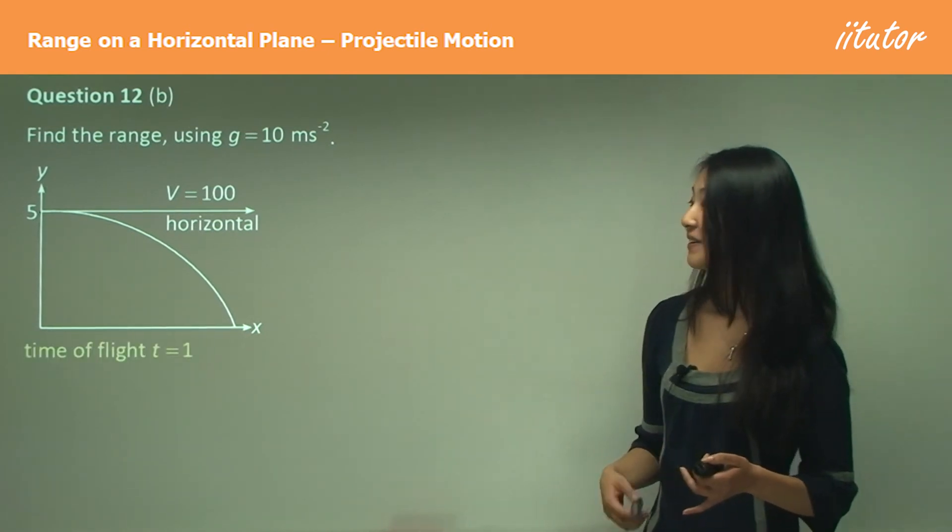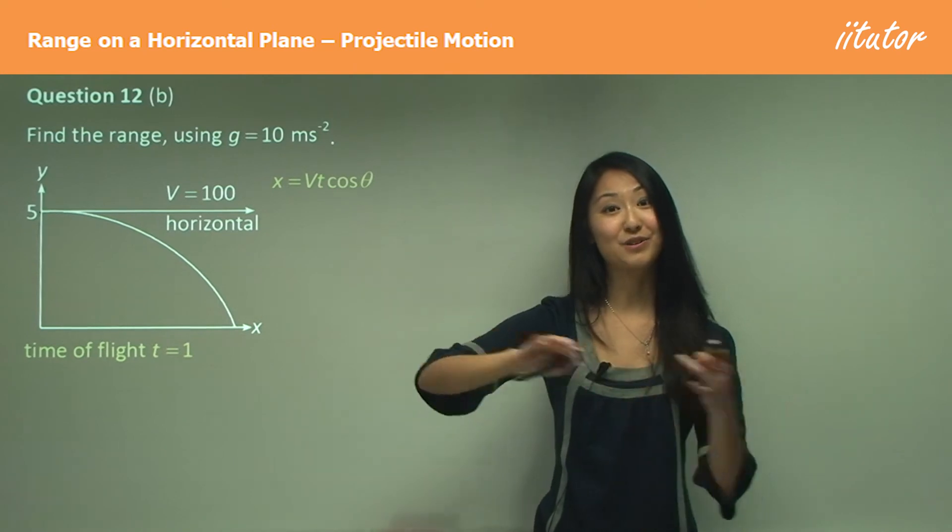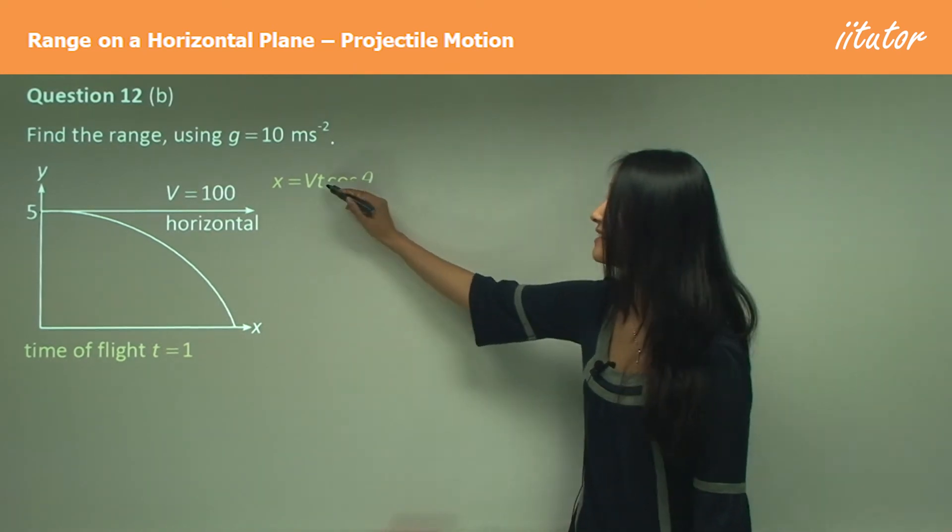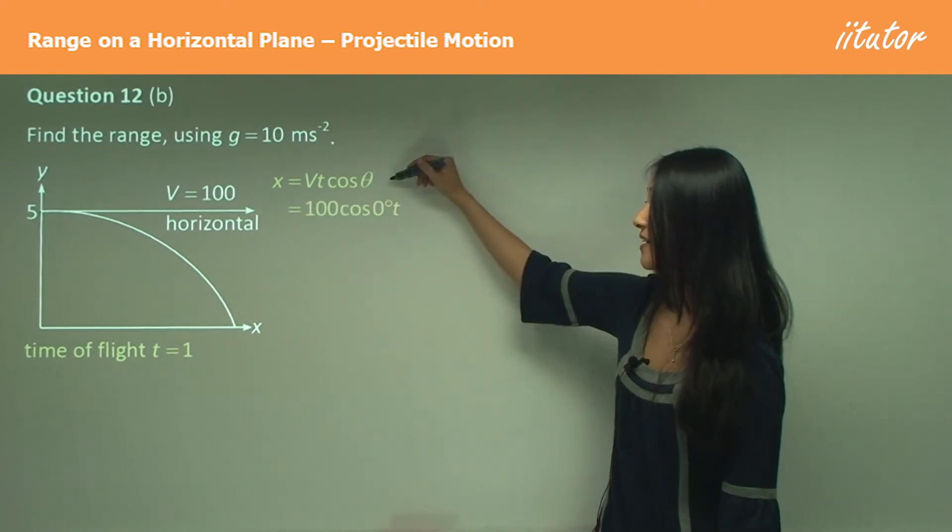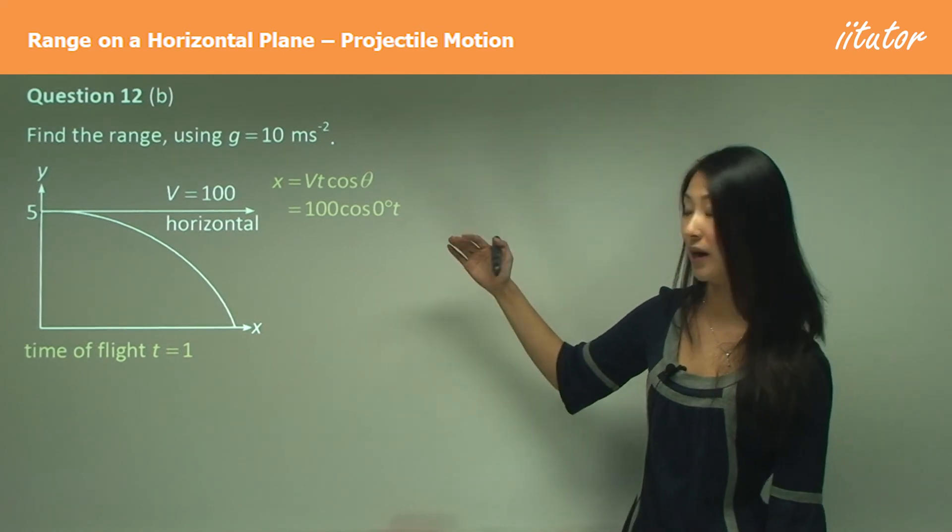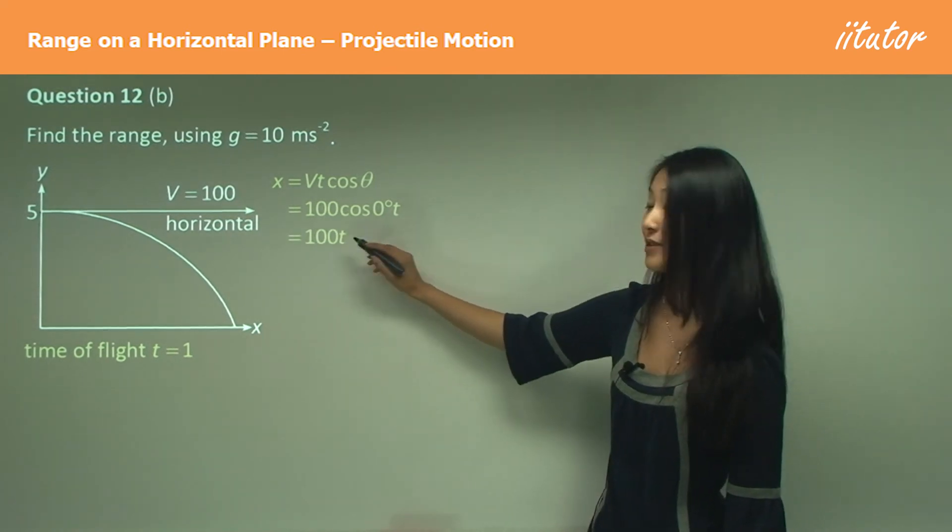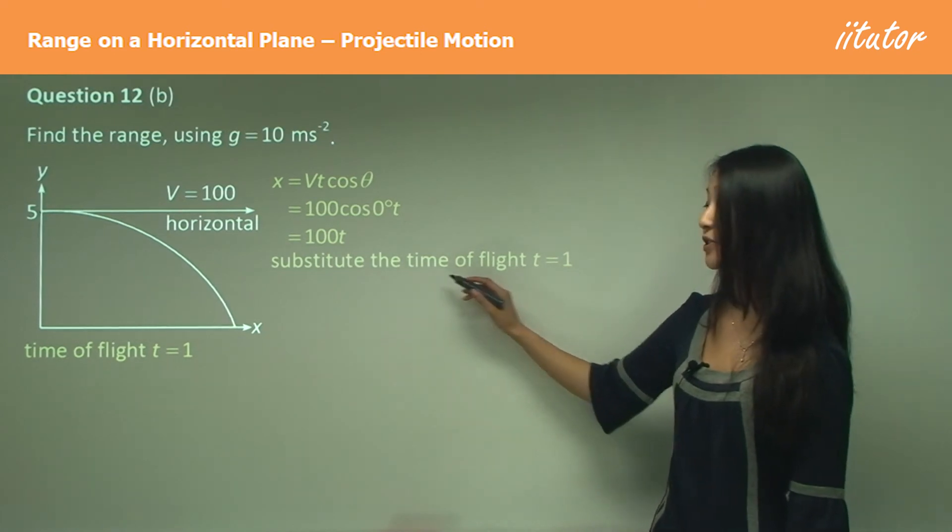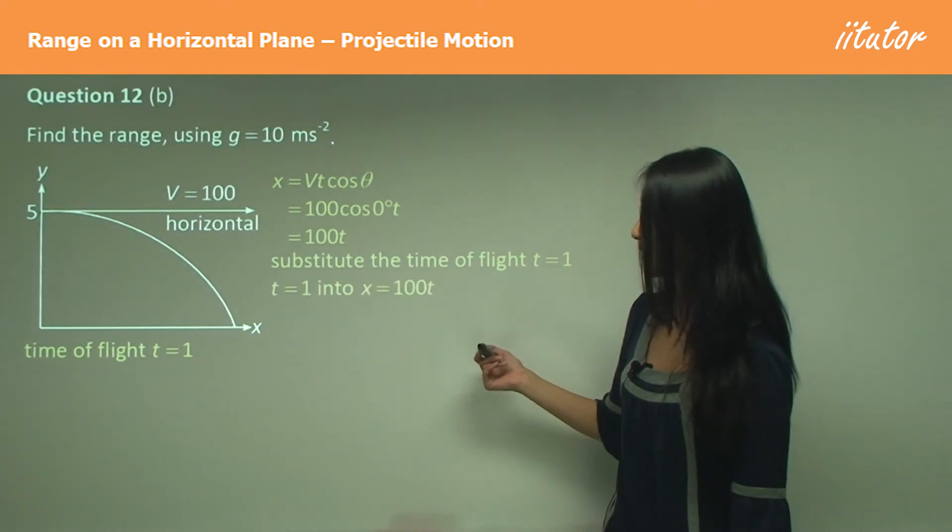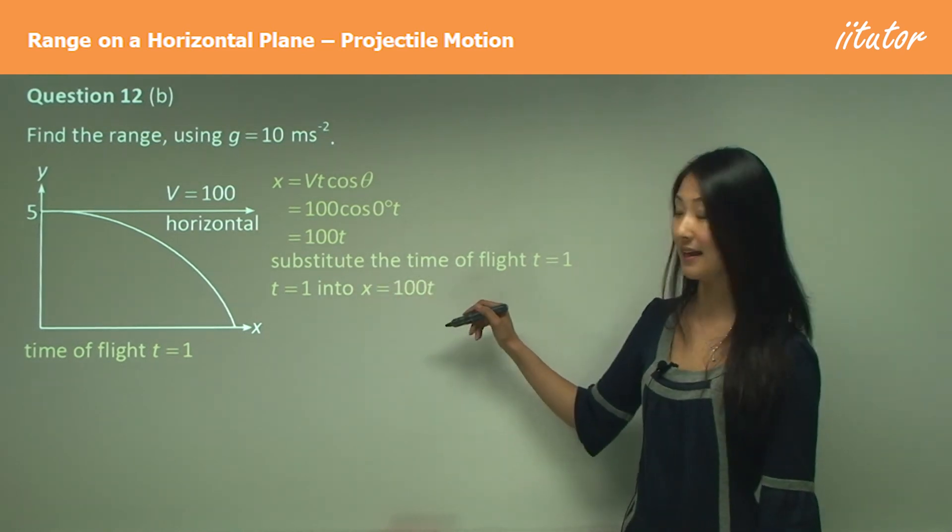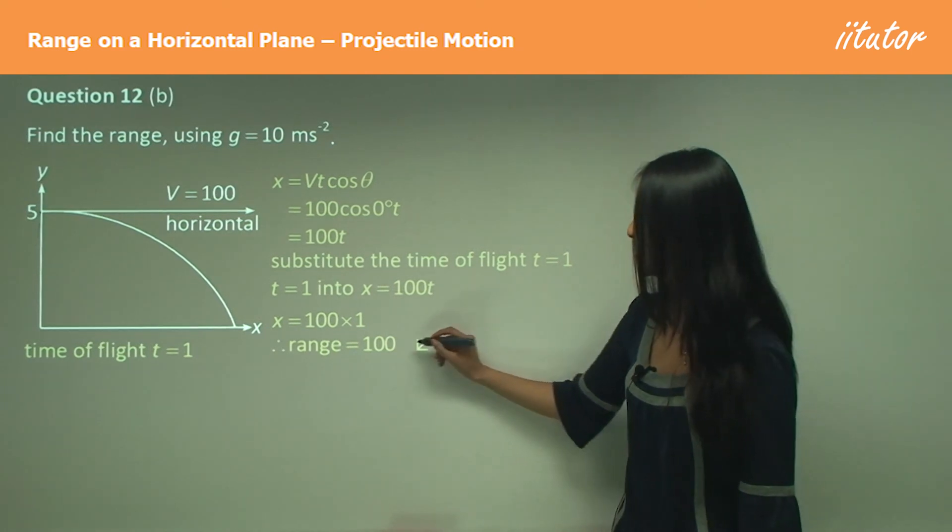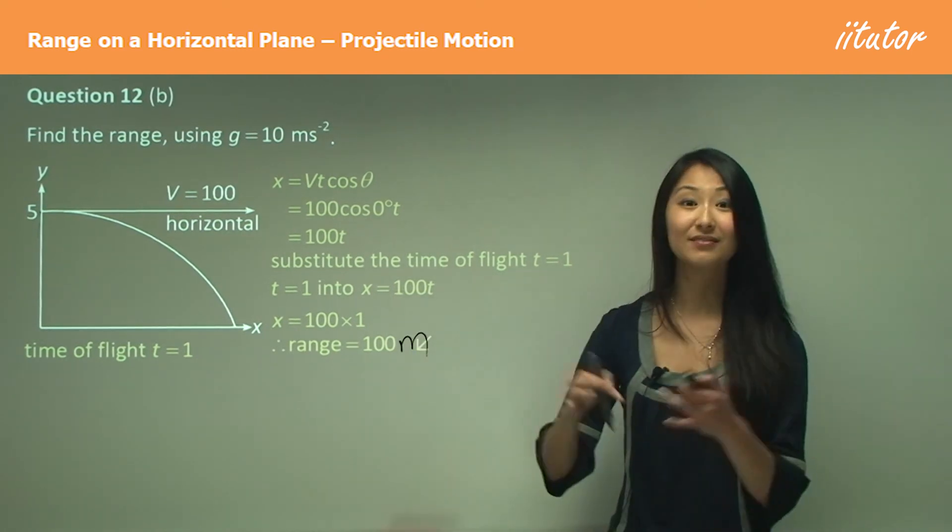Firstly we want to know that the horizontal displacement equation is VT cos theta, and substituting in v and cos theta was zero degrees. Cos zero degrees equals to one, so that's why I get a hundred T. And now all you need to do is substitute the time of flight which equals to one. So you literally just have substituting one into that is a hundred times one which equals a hundred. So your range is just a hundred meters for that.